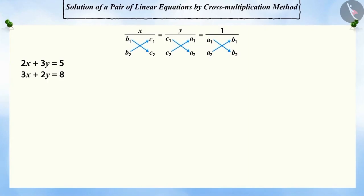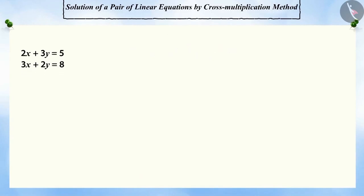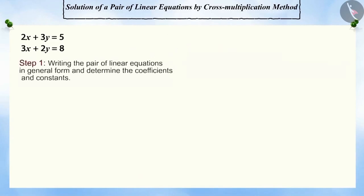Solving a pair of linear equations by cross-multiplication method takes four steps. In step 1, we write the equations in general form and determine the values of coefficients and constants.